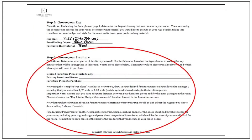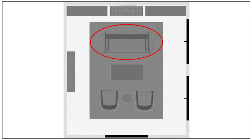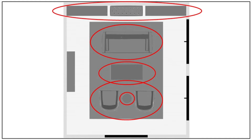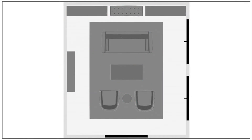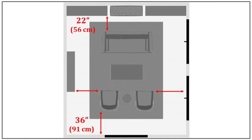Moving on to step six, choose your furniture. I've decided on the following pieces based on the key activities: a sofa, two accent chairs, a coffee table, an end table, two bookcases, a backless bench, and a console table. I made sure to confirm appropriate clearance — a minimum of 36 inches or 91 centimeters for main passageways, 22 inches or 56 centimeters between furniture pieces, and 14 to 18 inches or 36 to 46 centimeters between seating and the coffee table. I also made sure the coffee table is roughly two-thirds the length of my sofa.